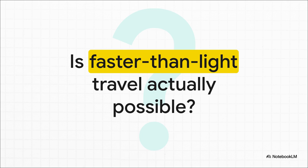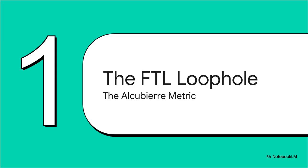I mean, we've all heard that nothing can go faster than light, right? Einstein's theory of relativity seems to put a pretty firm speed limit on the universe. But what if? What if the very same equations that set that limit also contain a loophole? A clever little backdoor that lets us cheat the cosmic speed trap without actually breaking the law.